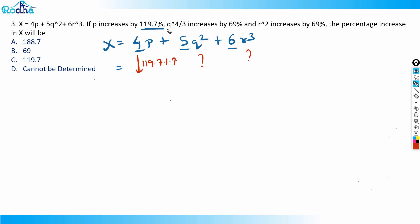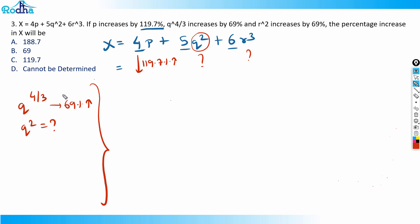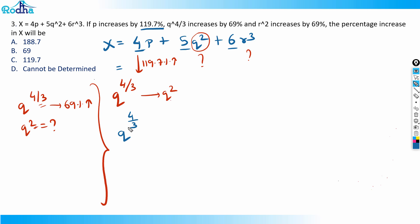Now, q raised to 4/3 increases by 69%. What is the impact on q²? To go from q^(4/3) to q², I multiply the exponent by 3/2: q^(4/3) raised to 3/2 gives q². So q² = [q^(4/3)]^(3/2).